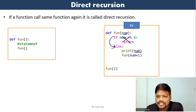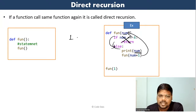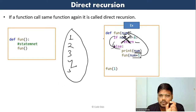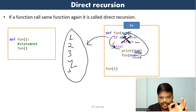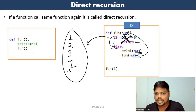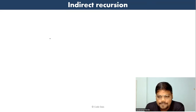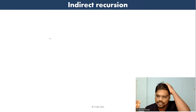Next, indirect recursion. Indirect means not direct. Here we create two functions: font1 and font2. Inside font1 body, we call font2. Inside font2 body, we call font1. These two functions are indirectly recursive because they call each other. This is called indirect recursion.